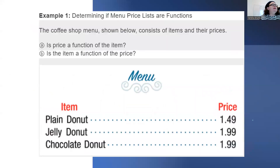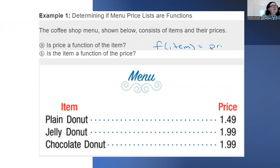Determining if menu prices are functions: the coffee shop menu shown consists of items and their prices. Is price a function of the item? The function of the item equals price. The input is the item — does each item have its own individual price? Yes, it does. So yes, price is a function of the item.